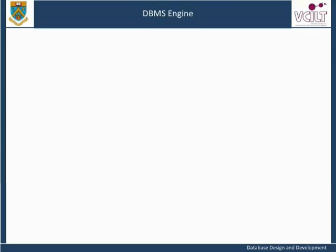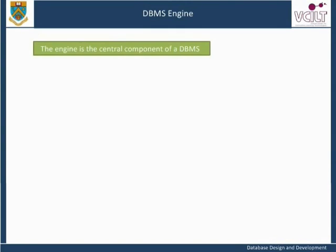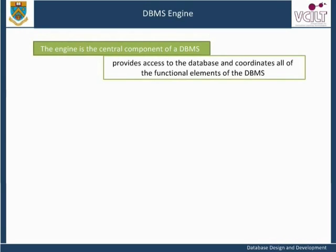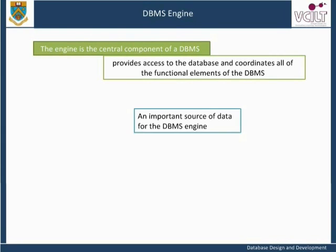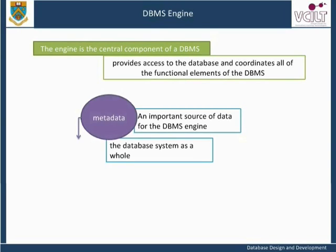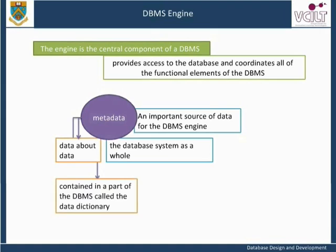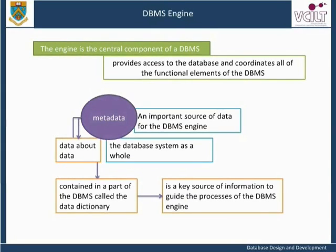The major components of a DBMS are as follows. The DBMS Engine is the central component of a DBMS. This component provides access to the database and coordinates all of the functional elements of the DBMS. An important source of data for the DBMS engine and the database system as a whole is known as metadata — data about data. Metadata is contained in a part of the DBMS called the Data Dictionary, and is a key source of information to guide the processes of the DBMS engine.